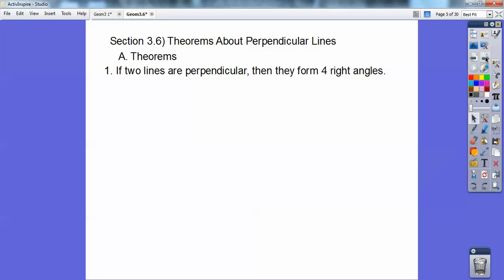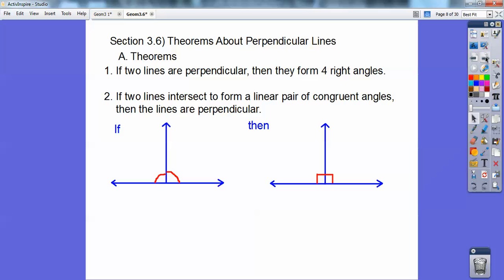So here's some theorems. If two lines are perpendicular, then they form four right angles. We've seen that. This is probably the fourth time we've dealt with this one. If two lines intersect to form a linear pair of congruent angles, then the lines are perpendicular.